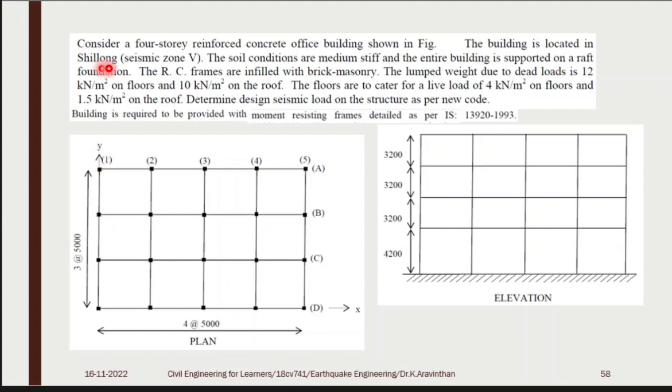This building is located in Shillong, seismic zone 5. Here they have given the zone in this problem so you don't need to refer the Annex E. The zone is given, only the value of zone 5 has to be referred. The soil conditions are medium stiff and the entire building is supported on raft foundation. The overall built-up area will be covered with a single foundation. For all the columns you have a uniform foundation called raft foundation. The RC frames are infilled with brick masonry. The lumped weight due to dead loads are 12 kN/m² on floors and 10 kN/m² on roof.